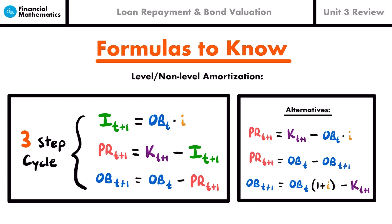This three-step cycle works for level or non-level amortization. As long as you know the amount of each payment at each moment in time, this cycle will work fine. We also have alternative ways to represent some of these equations. The principal at t+1 equals the payment at t+1 minus OB_t times the interest rate — that's just replacing the interest term. You can also find the principal at t+1 as OB_t minus OB_{t+1}.